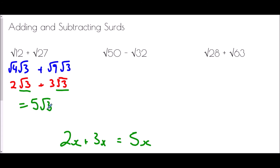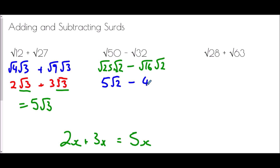Let's try root 50 take away root 32. What's the biggest square number that goes into 50? That's 25, so it's root 25 times root 2. And the biggest square number that goes into 32 is 16, so root 16 times root 2. Root 25 is 5, giving 5 root 2. Take away root 16 which is 4, giving 4 root 2. If I had 5 of something and took 4 away I'd be left with just one — so the answer is root 2.